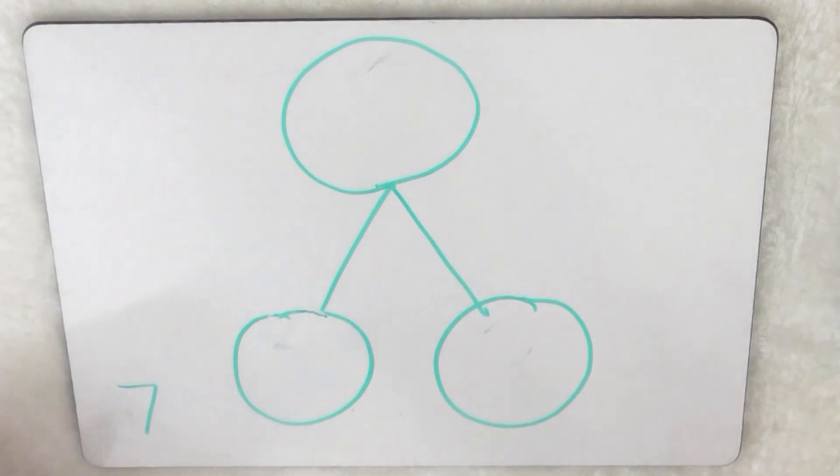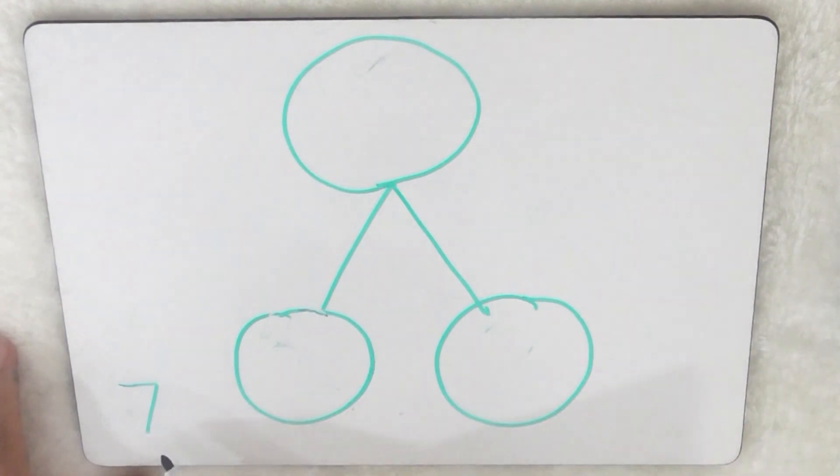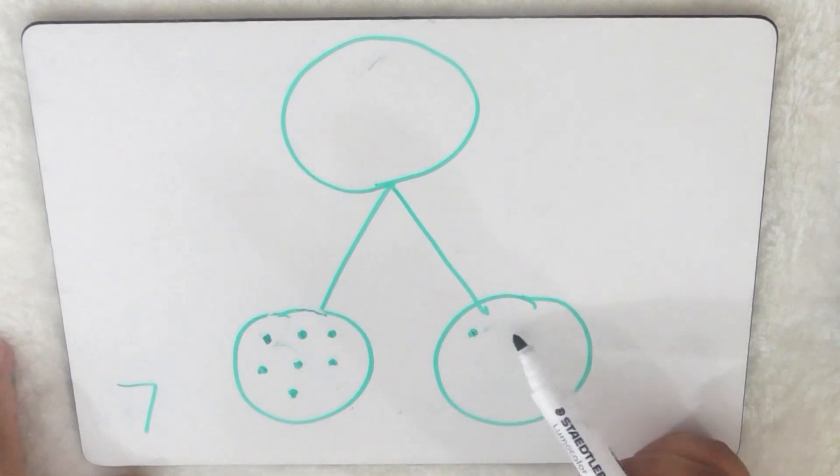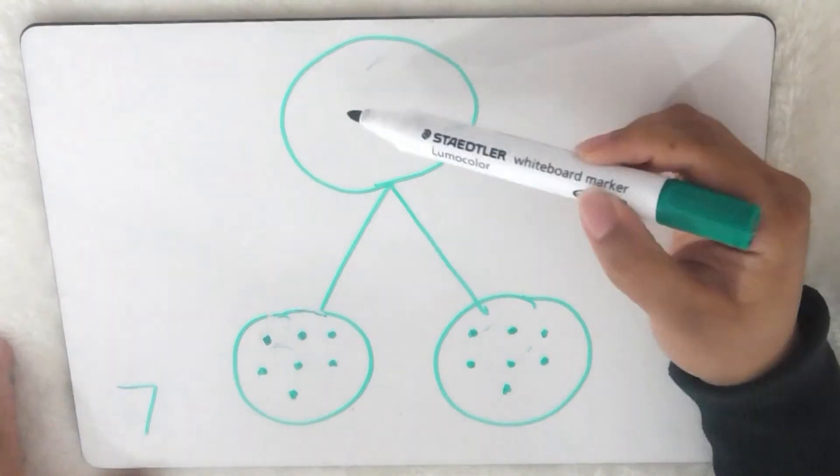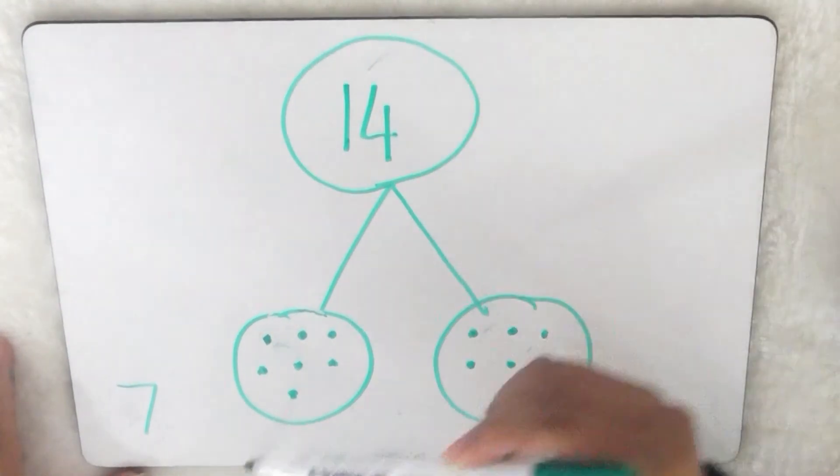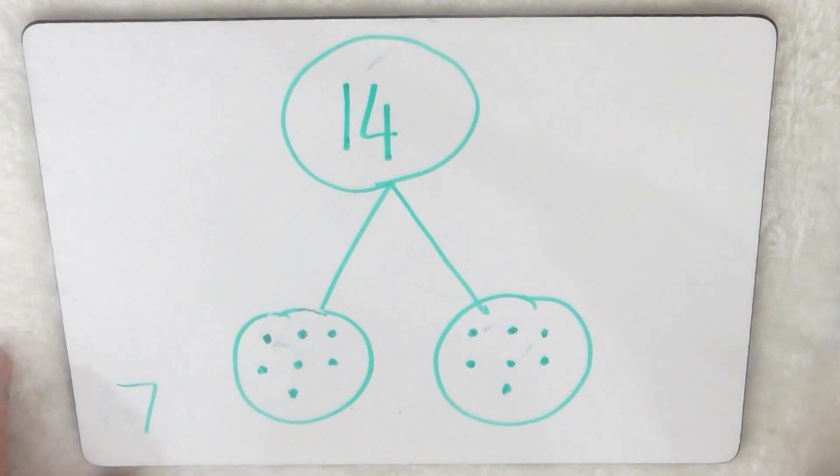Right, now you've had a chance to double the number seven, let's see how you got on. So because I'm doubling seven, I need seven here and here, so one, two, three, four, five, six, seven, one, two, three, four, five, six, seven, and then I find the total, one, two, three, four, five, six, seven, eight, nine, ten, eleven, twelve, thirteen, fourteen. So double seven is fourteen. Bye for now.